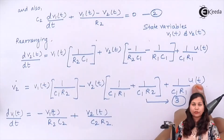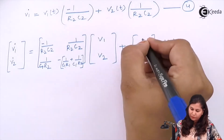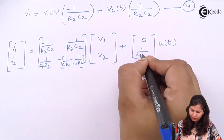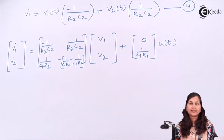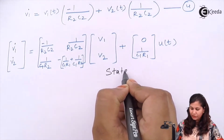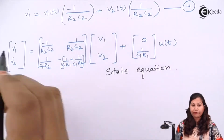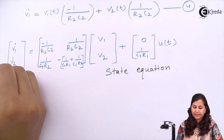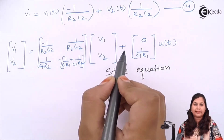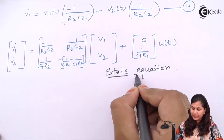The coefficient of u(t) in v1 dot is zero since v2(t) was not present in that equation, and the coefficient in v2 dot is 1/(C1·R1). This is our state equation, defining the derivatives of the state variables as a linear combination of the state variables and the input — which is why it is called the state equation.